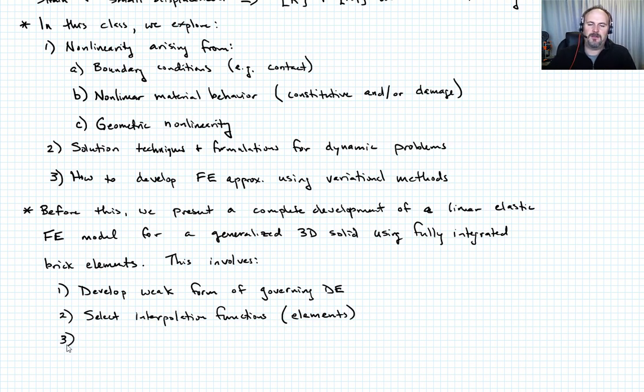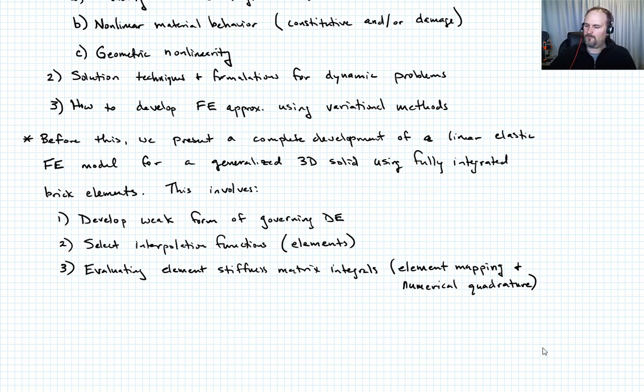Number three, we'll talk about how to evaluate stiffness - how to evaluate integrals to get the stiffness matrix. If you recall from previous class, that involves two important features: element mapping, where we map an element to its natural coordinates, and numerical quadrature, which in our case will be Gauss quadrature.